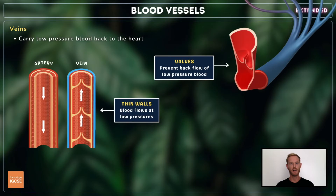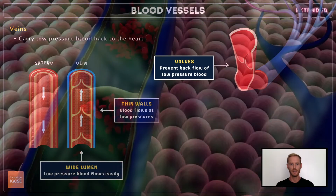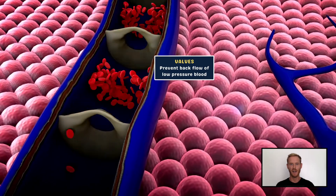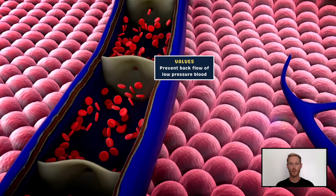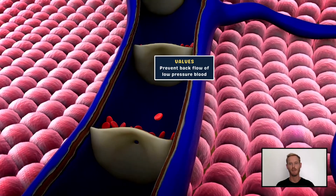Veins carry blood at low pressures and therefore have much thinner walls with less muscle and fewer elastic fibres. They have a large lumen, which lowers resistance and allows blood to flow more easily. They also contain valves, as blood pressure is insufficient to prevent backflow.